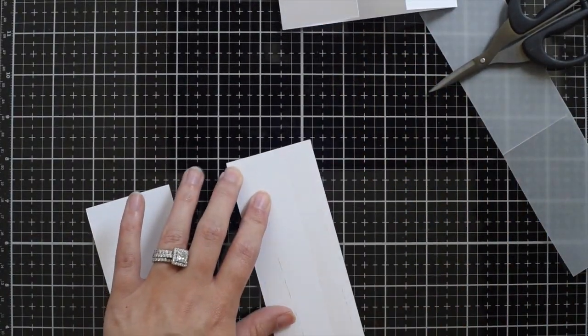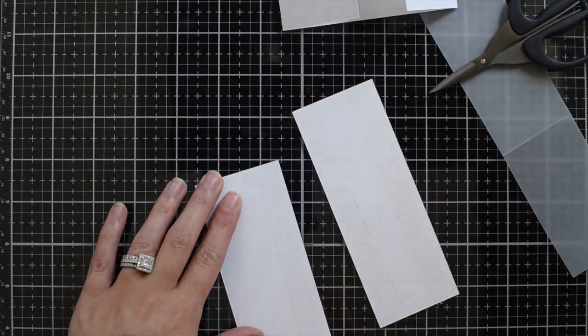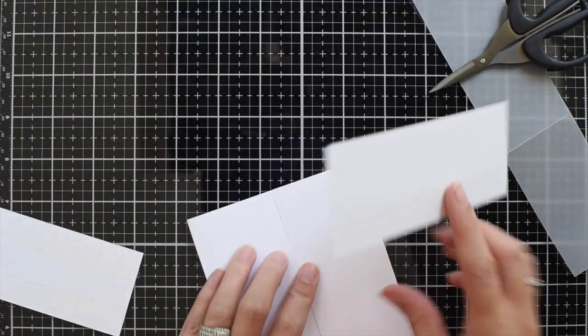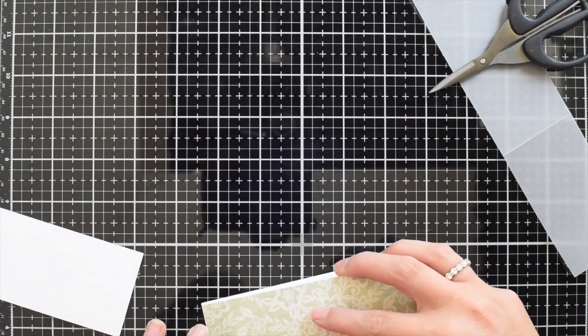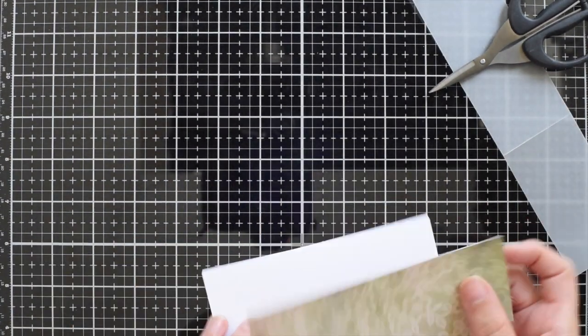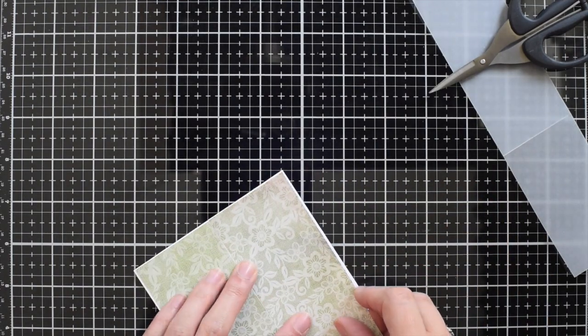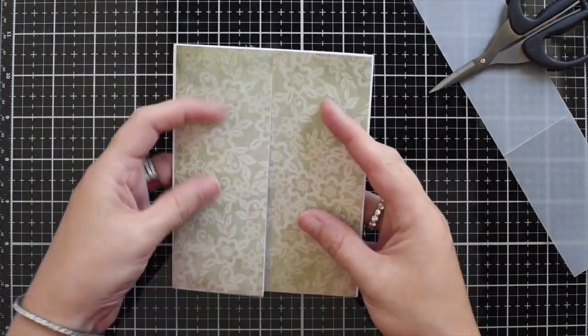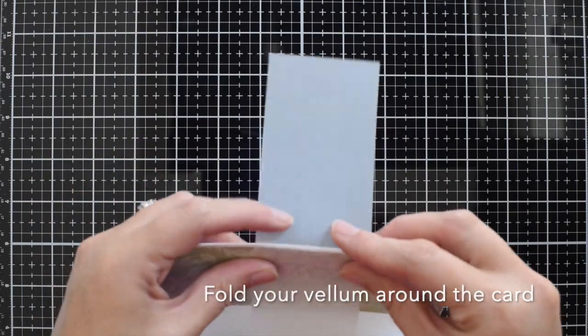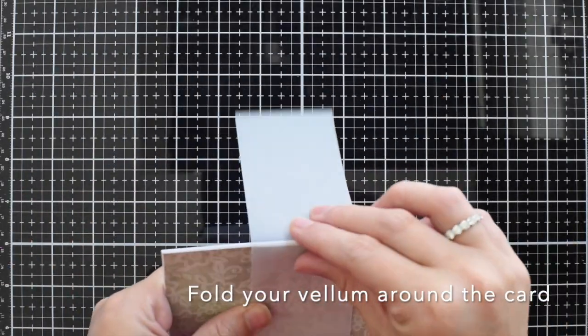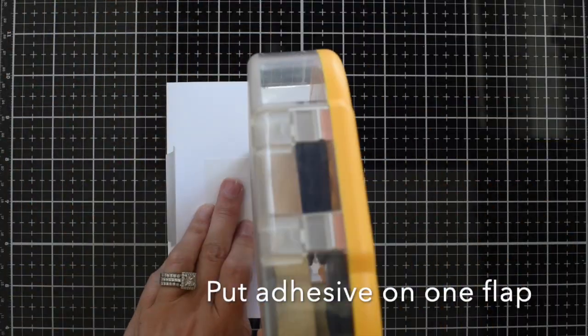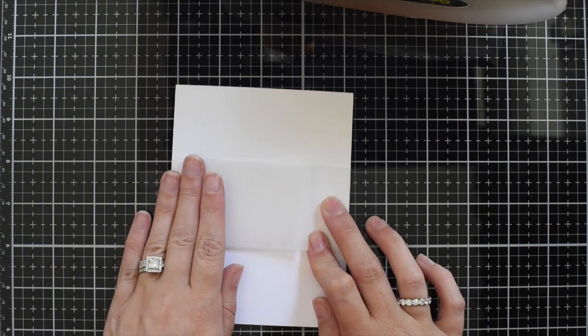Now I'm going to put my adhesive on the two small green pieces for the front of my card. And I'm going to go ahead and adhere those to the front of my card, and then I'll be able to put my vellum on over top of that to make sure that it fits right. I'm going to go ahead and fold my vellum around the card and then I'm going to put some adhesive on the back and close that up.